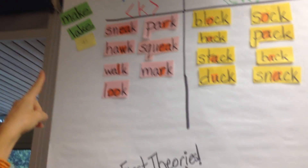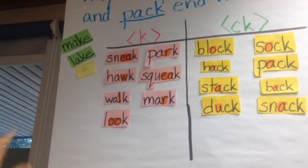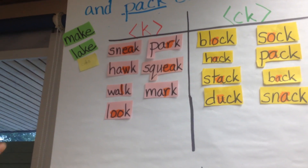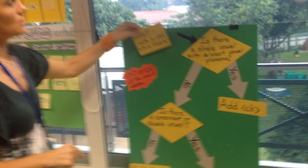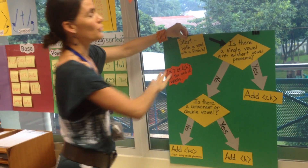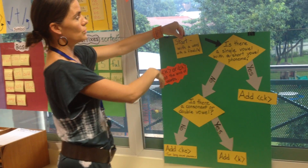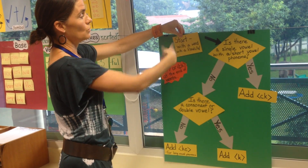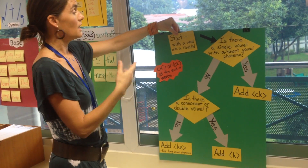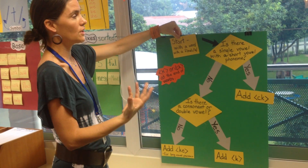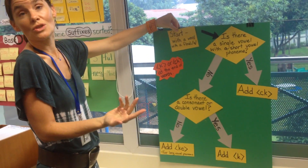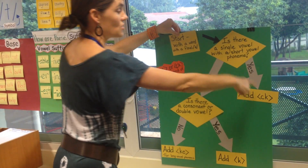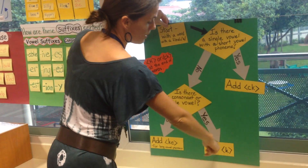And then we had a few of these — the A consonant, silent E — so I put those to the side. From that, we tried to develop a flowchart. So when you're writing a base that ends with a final K sound, we thought about what questions could we ask to get us to whether we have CK or K.